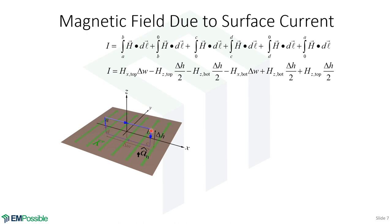Next we integrate from B down to zero. We're going in the negative Z direction, so we need a negative sign. Since dL is in the Z direction, we're listening to the Z component of the magnetic field on the top of this current element. From B to zero, if the total height of this rectangle is δH, then B to zero is δH/2. Then from zero to C, we're still going in the negative Z direction — still the Z component — but now we're on the bottom of our current element, and the length is again δH/2.